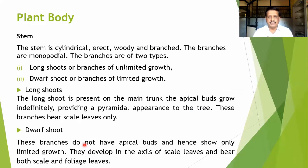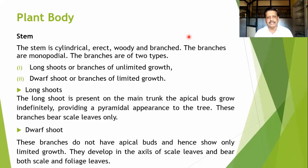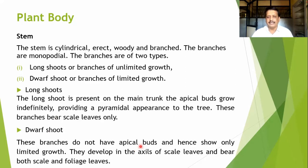The stem portion is quite important. The stem is cylindrical, erect, woody, and mostly well-branched. These branches are called monopodial branches. The long shoots are branches with unlimited growth, and branches with limited growth are called dwarf shoots. Long shoots are present on the main trunk. The apical buds can grow indefinitely, providing a pyramidal appearance to the tree, and these branches bear small scaly leaves.